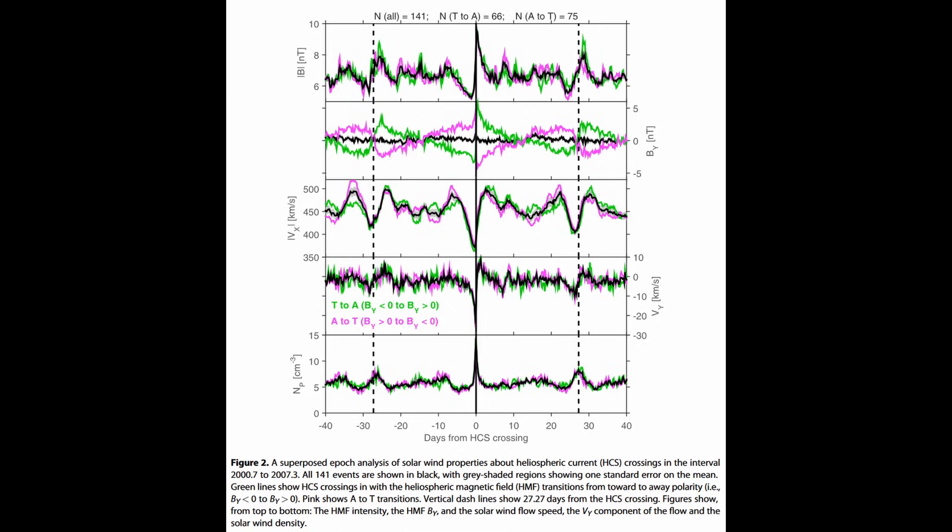Of these interactions, the sun's magnetic fields shifted directions, 75 times pointing towards the Earth and 66 times pointing in the opposite direction.